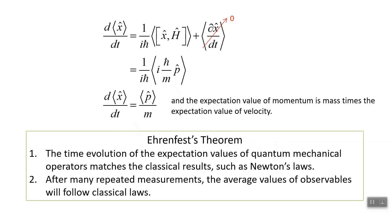That's how I would articulate Ehrenfest theorem: the time evolution of expectation values of quantum mechanical operators — dx/dt and dp/dt — matches classical results such as Newton's laws. Another way Ehrenfest theorem is commonly stated is that after many repeated measurements, the average value of observables will follow classical laws. In particular, the statement that the time derivative of the expectation value of momentum is the expectation value of minus the gradient of potential energy — that's the crux of Ehrenfest theorem. But as you can see, it's bigger than that, encompassing velocity and momentum through the general Heisenberg equation of motion.